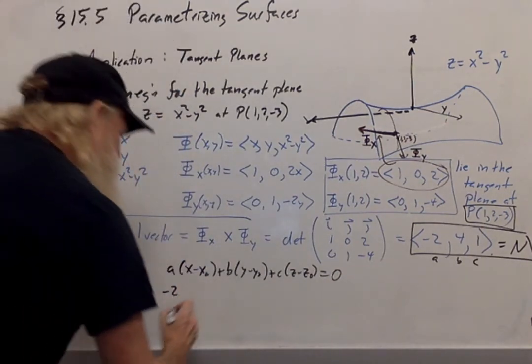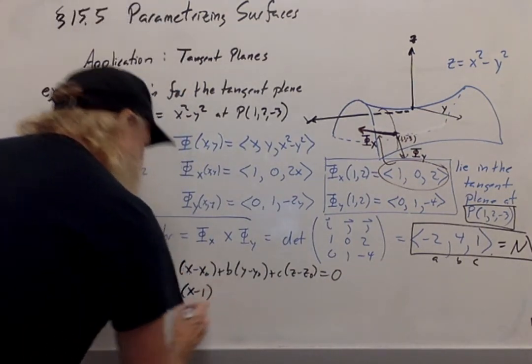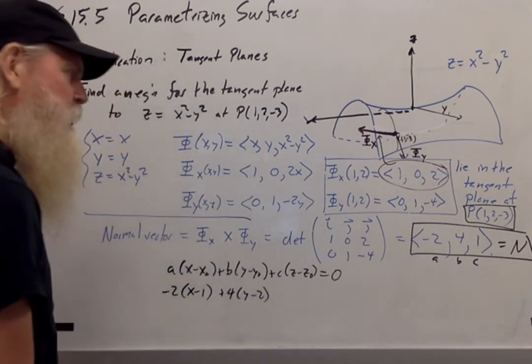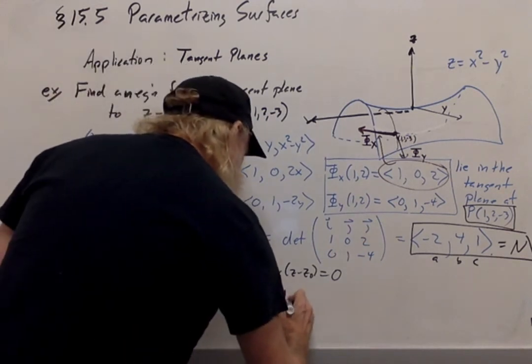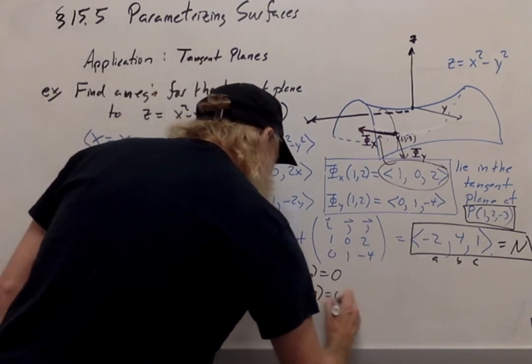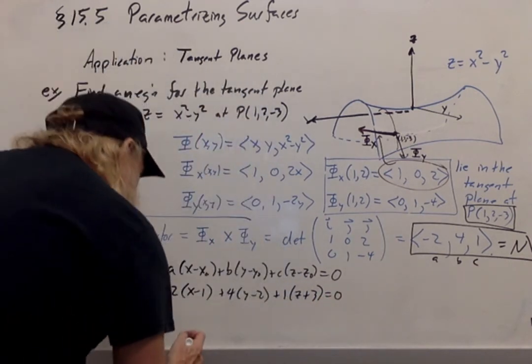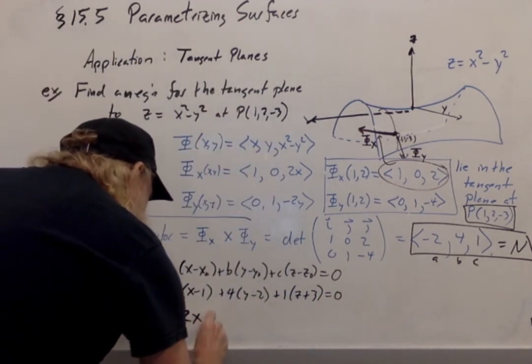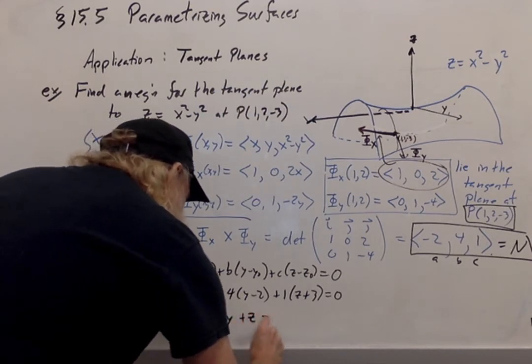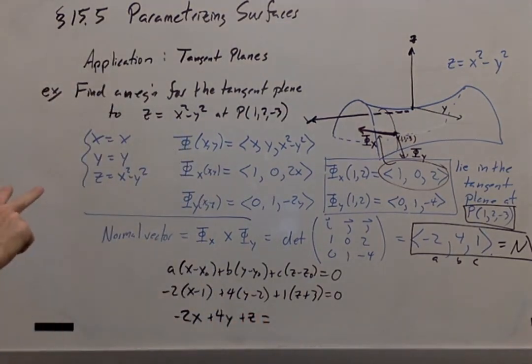So I get -2 times (x - 1) plus 4 times (y - 2) plus 1 times (z + 3) equals 0, which is -2x plus 4y plus z equals, let's see, 2 minus 8 is -6, plus 3 is -3.